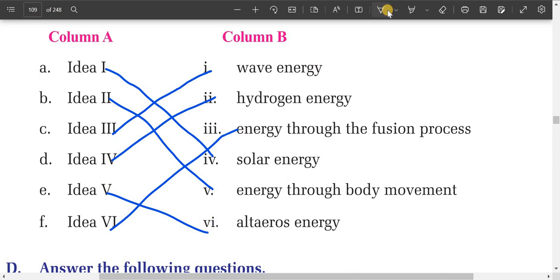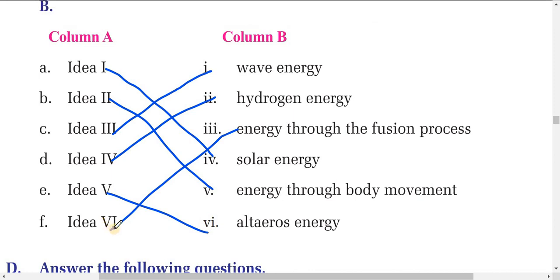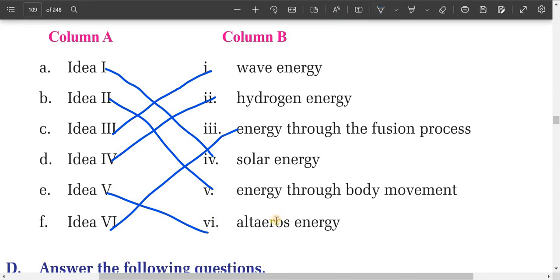Idea two is about energy through body movement. Idea three is wave energy — if you read the text you will find wave energy. Idea four is hydrogen energy. Idea five is ultraviolet energy. And idea six, the last one, is energy through the fusion process.